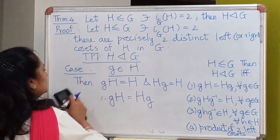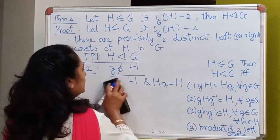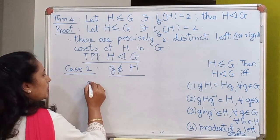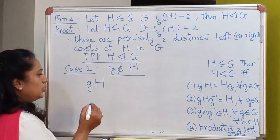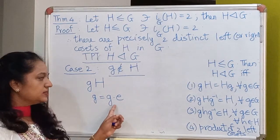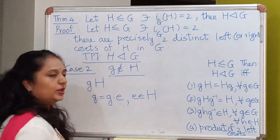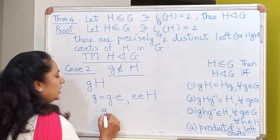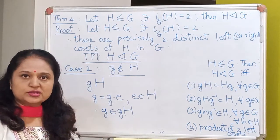Now let's look at the case when the element g does not lie inside H. Look at the left coset gH. We know that the element g can be written as g times e, where e belongs to H because H is a subgroup. So clearly the element g lies in the left coset gH.